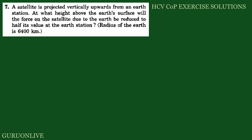It's CV chapter 7th question. A satellite is projected vertically upwards from an earth station. At what height above the earth surface will the force on the satellite due to the earth be reduced to half its value at the earth station? Radius of the earth is 6400 km.